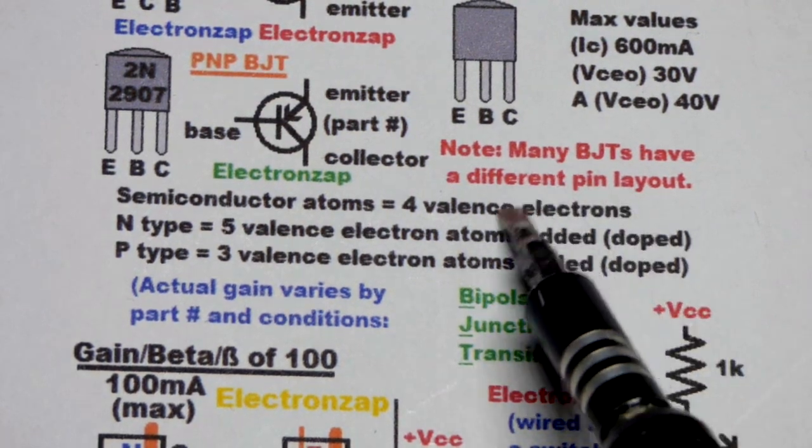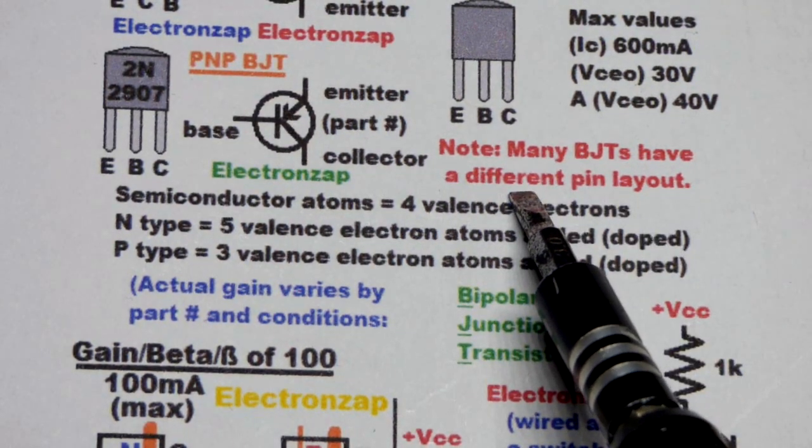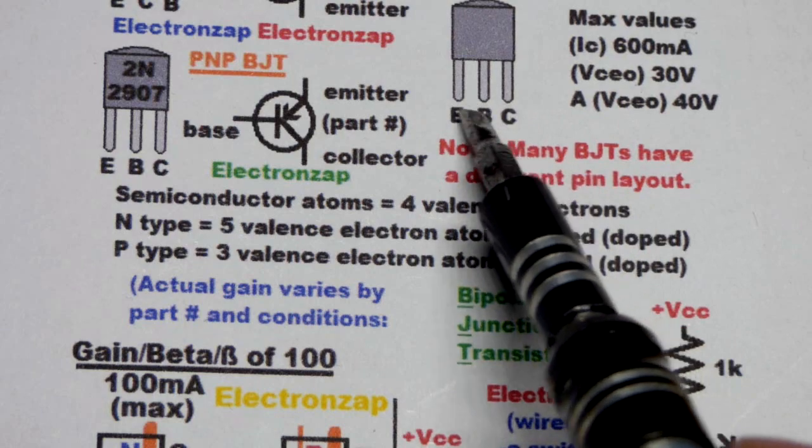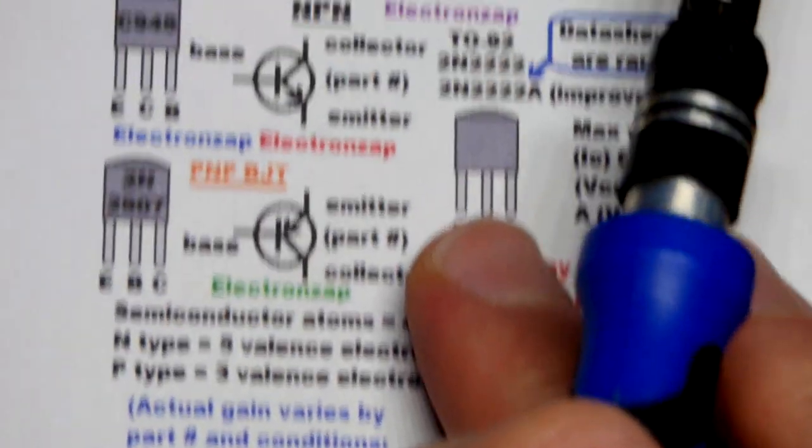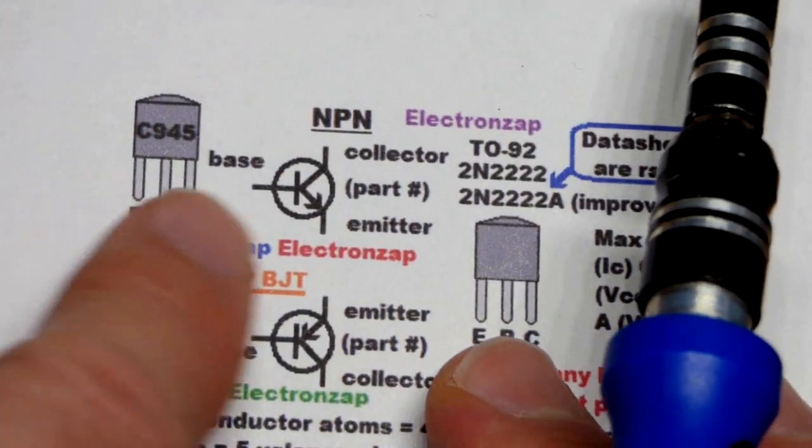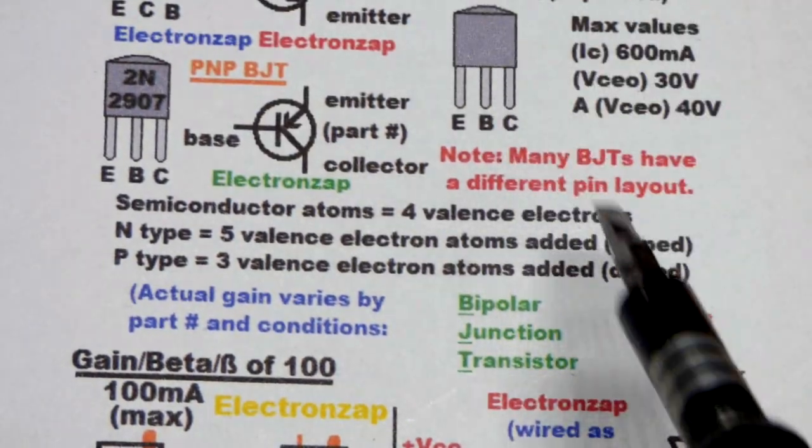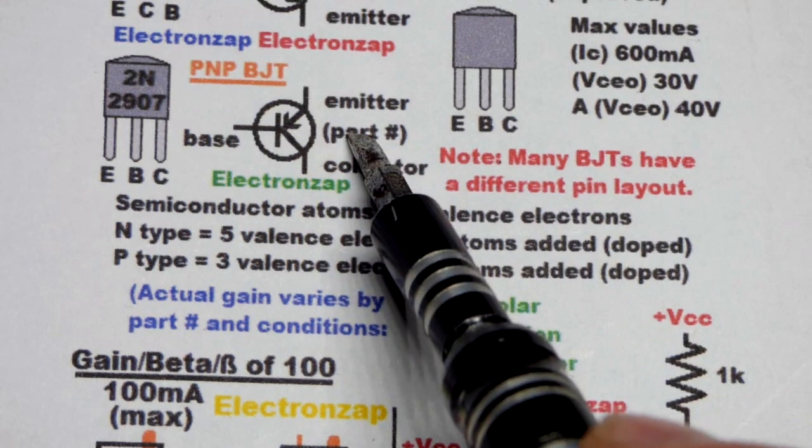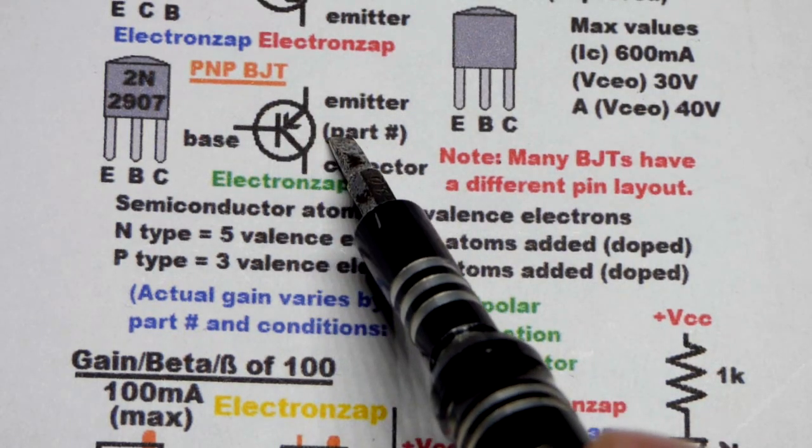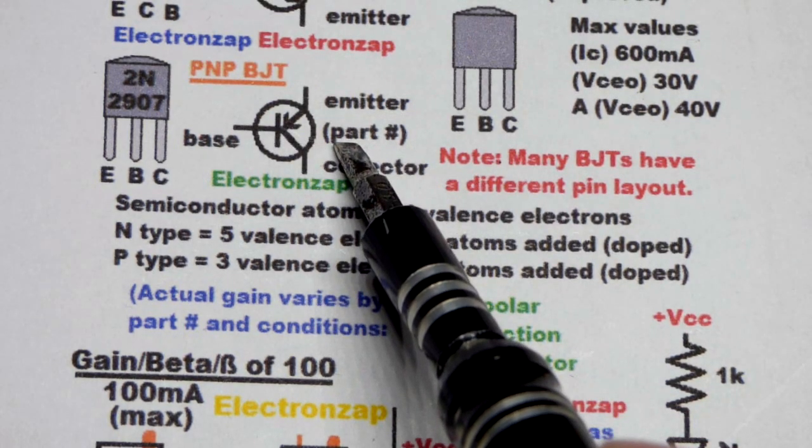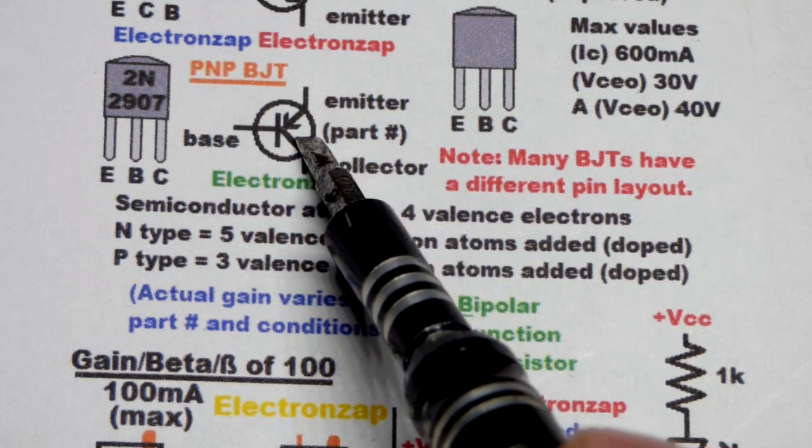To wrap up the diagram portion of this, I'll go over the notes. Some of them I did cover before. But the pin layout may be different based on different transistors. As I said before, this one has a different pin layout, even though it's an NPN, just like the 2N2222. The part number is often written next to the transistor on the schematic symbol.